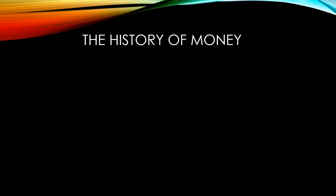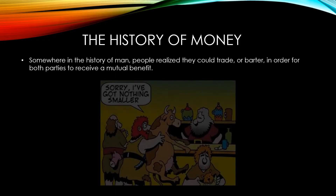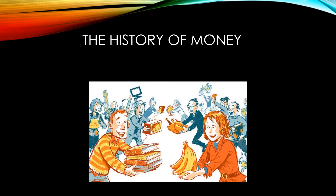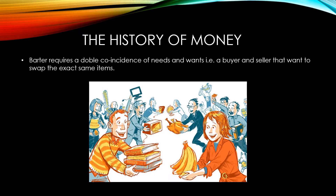Why do we need money? To answer that question, we have to look back to the history of man. At some point, people realised that they could trade, or barter in other words, in order for both parties to receive a mutual benefit. As you can see from the illustration below, this eventually led to a problem: how do you trade items when they're not of equal value? This problem in a nutshell is the double coincidence of wants and needs.